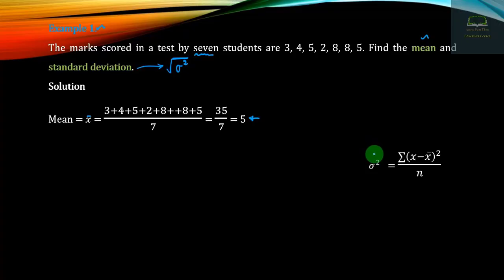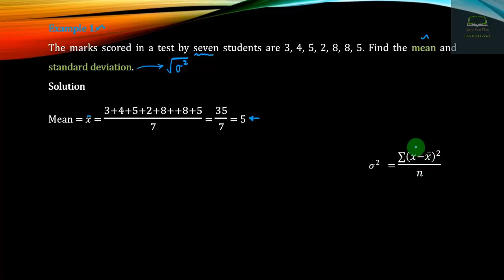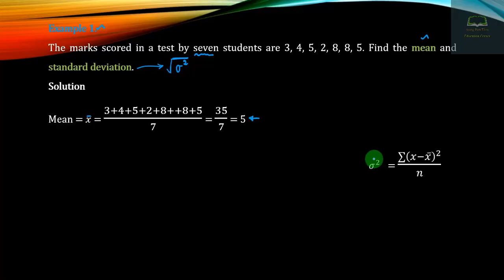The formula is: sigma squared equals the summation of (x minus x-bar) squared, divided by n. We already have sigma squared. The deviation squared terms are computed, and the standard deviation is the square root of sigma squared, which equals the square root of the summation of (x minus x-bar) squared over n.